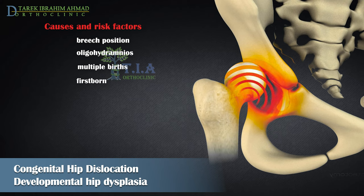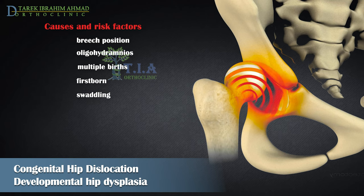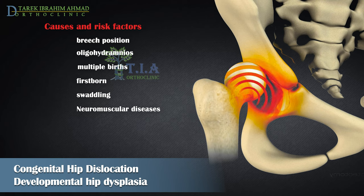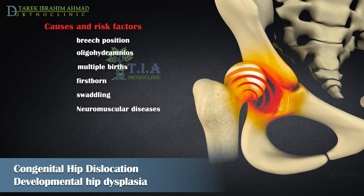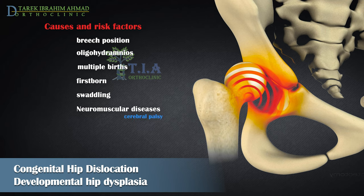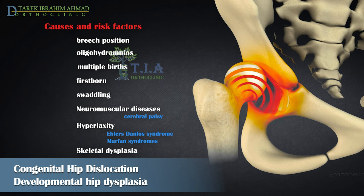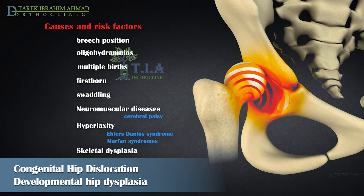Improper swaddling may also contribute to DDH; when an infant's legs are swaddled in a straight, close position, DDH can occur. DDH can occur in otherwise healthy children or be associated with specific conditions or syndromes, including neuromuscular diseases such as cerebral palsy, hyperlaxity commonly seen in Ehlers-Danlos and Marfan syndromes, and skeletal dysplasia — a grouping of disorders that affect how children's bones grow.